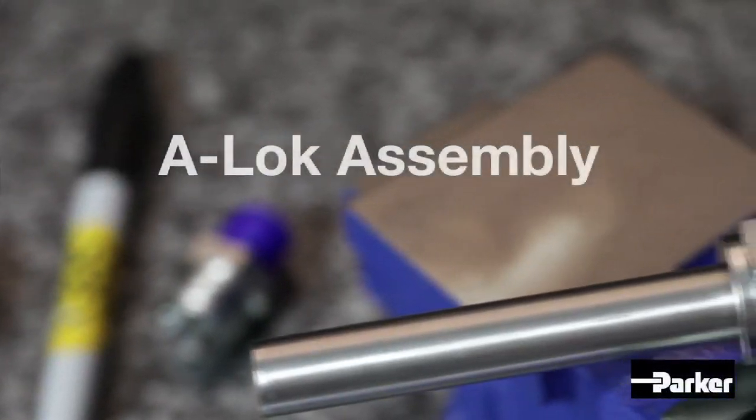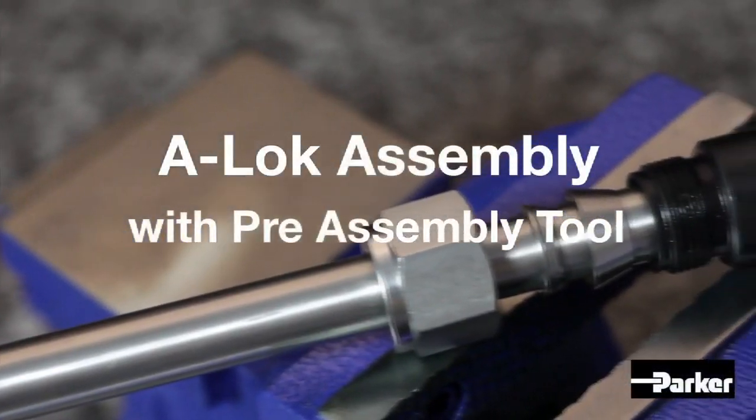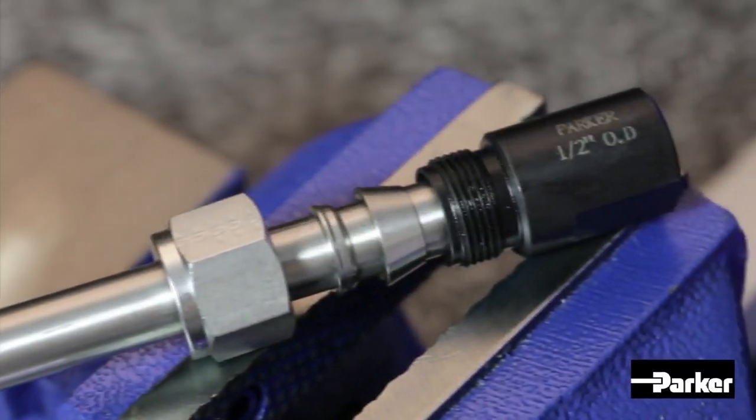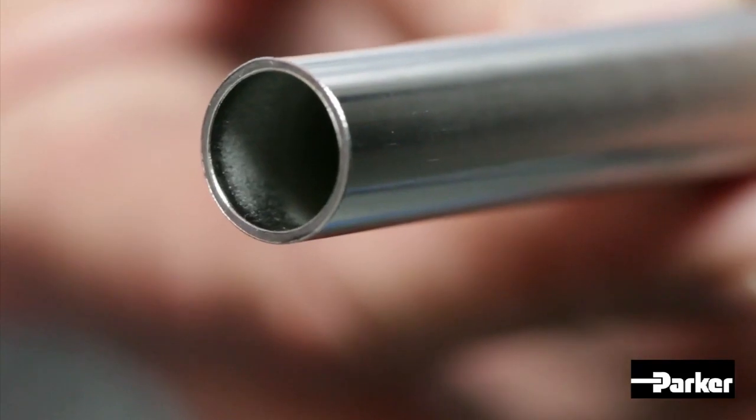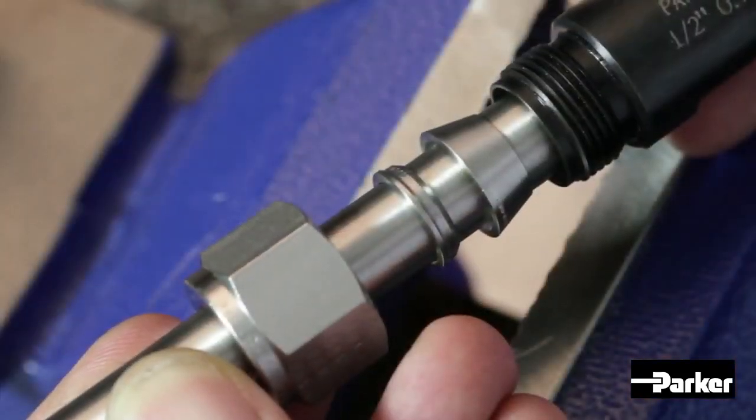Welcome to the Parker A-Lock Twin Ferrule Fitting assembly video when using a pre-assembly tool. To begin, first ensure you are using properly prepared tube and have checked for correct ferrule orientation.